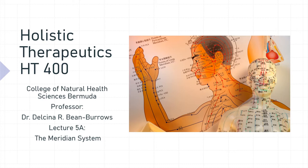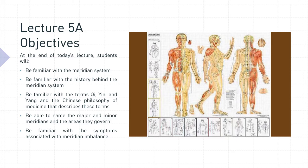The lecture objectives for 5a are that at the end of today's lecture, students will be familiar with the meridian system, be familiar with the history behind the meridian system, be familiar with the terms Qi, Yin, and Yang and the Chinese philosophy of medicine that describes these terms, be able to name the major and minor meridians and the areas they govern, and be familiar with the symptoms associated with meridian imbalance.